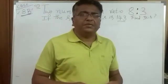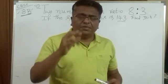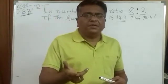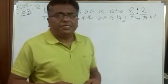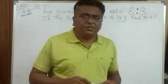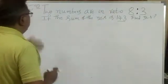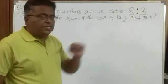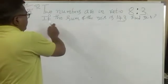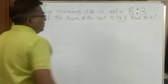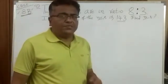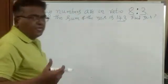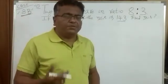The problems will be given as statements and we need to understand the statement first and convert that into a linear equation. By solving that linear equation, we will get the answer. The first question is: two numbers are in a ratio of 8 is to 3, and if the sum of the numbers is 143, find the two numbers. There are two unknown numbers here, and our aim is to find them.